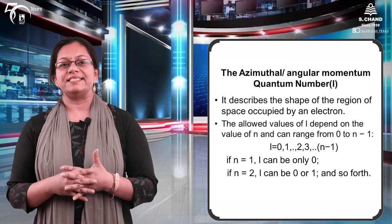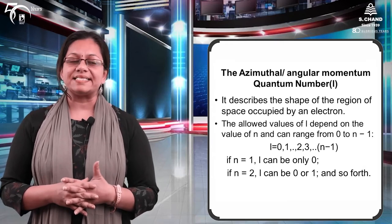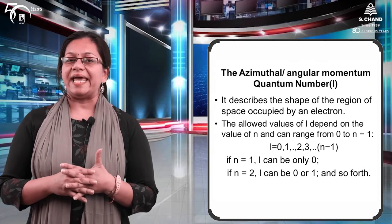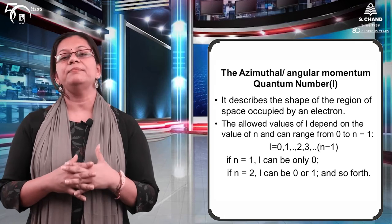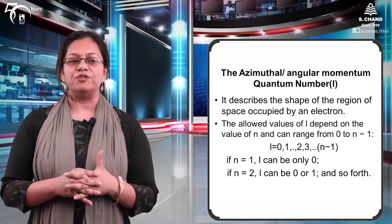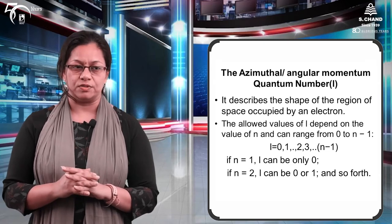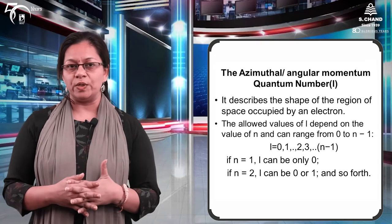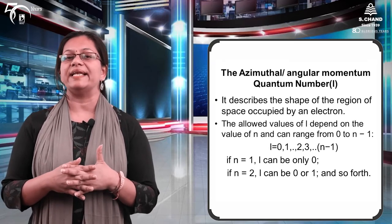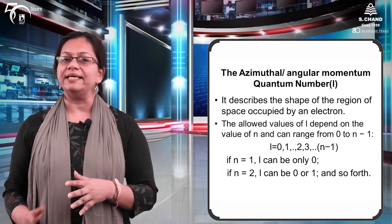The second quantum number is the azimuthal quantum number, also called the angular momentum quantum number, denoted by small l. It describes the shape of the region of space occupied by the electron. L can take values from 0 to n−1. If n=1, l can only be 0; if n=2, l can be 0 or 1; if n=3, l can be 0, 1, or 2.